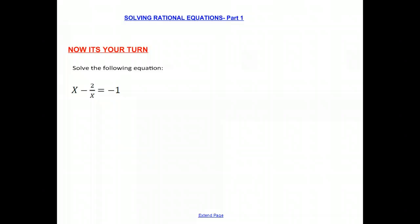So, now it is your turn. We want you to solve this equation. x minus 2 over x equals negative 1. If you're having any trouble solving it, just go back, rewind the screencast, look at what was done, and try to follow the steps. I hope this was helpful, good luck, and see you again next time.